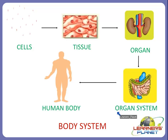Even a simple action like lifting a bag requires us to use different parts or organs of our body. Almost all organs work together to perform a particular function for the body. A group of organs working together to perform a particular function is termed as an organ system, and many such organ systems are formed in our body. Always remember that the body system is not a simple structure - it is a very complex structure.